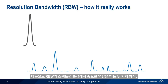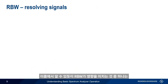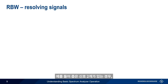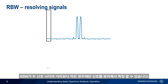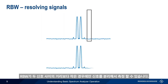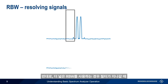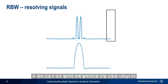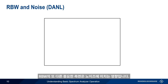Let's examine two ways that resolution bandwidth plays a critical role in spectrum analysis: separating signals and noise. As the name implies, one of the things that resolution bandwidth affects is our ability to separate or resolve closely spaced signals. For example, if we have two narrow signals, we can only separate them if our resolution bandwidth is smaller than the distance between the two signals. If we use a wider resolution bandwidth, both tones are covered by the filter as it sweeps past, and they appear as a single signal in our trace.